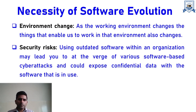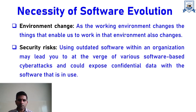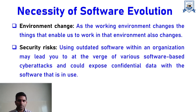Now, what is the necessity of software evolution? First is due to environment change, and second is because of security risk. As the working environment changes, the things that enable work in that environment also change. For example, if software was developed in 2020 using some machine learning techniques, over the period of time a number of techniques change. If you want to shift your project to deep learning, then due to this technology change in the surrounding environment, you have to shift your project from a machine learning to a deep learning environment.